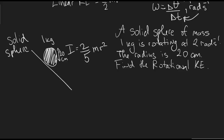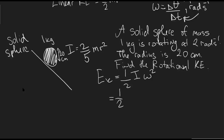Let's apply this to an example. A solid sphere of mass 1 kg is rotating at 2 radians per second, with radius 20 cm. The rotational kinetic energy is one-half times I times ω², where I = two-fifths MR² for a solid sphere. So it's one-half × (2/5) × 1 × (0.20)² × 2², giving approximately 0.032 joules.